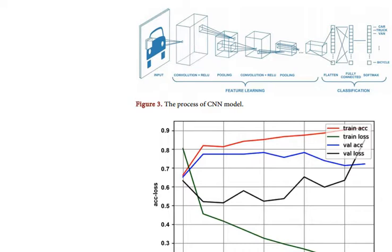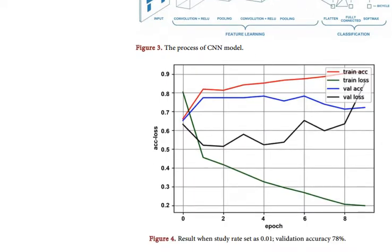After we ran our training, the trained CNN model was able to distinguish whether a CT image showed tuberculosis or not. We visualized the results and got Figure 4. The learning rate was set at 0.01 and the validation accuracy was